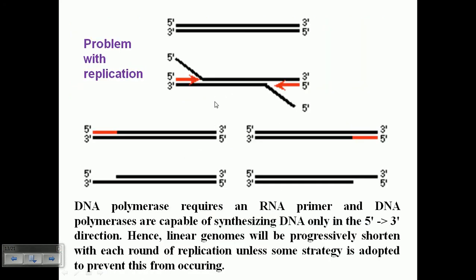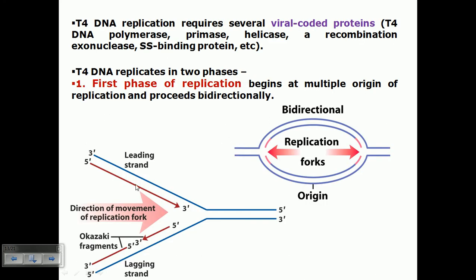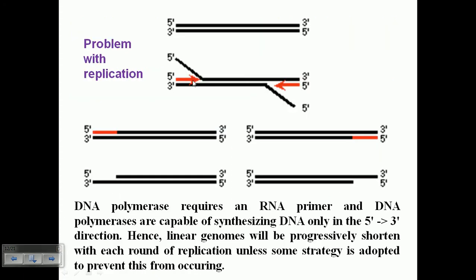During this process, they encounter a problem. If we are talking about linear DNA — like the DNA of T4 virus — each time a primer is added at the terminal ends and synthesis begins, in the lagging strand we need to add primers for synthesis, because DNA polymerase can only synthesize in the 5' to 3' direction.